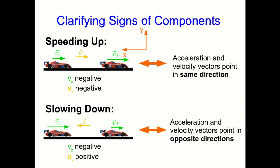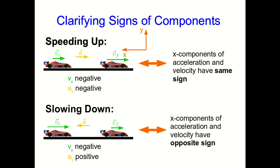What we can now say in terms of the signs of the components is that for an object speeding up, moving along the x-axis, the x components of its acceleration and velocity have the same sign, and if it's slowing down, the x components of acceleration and velocity have opposite sign.